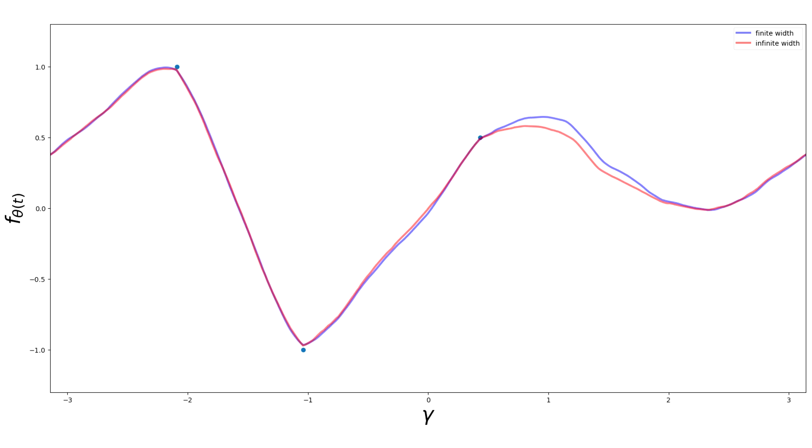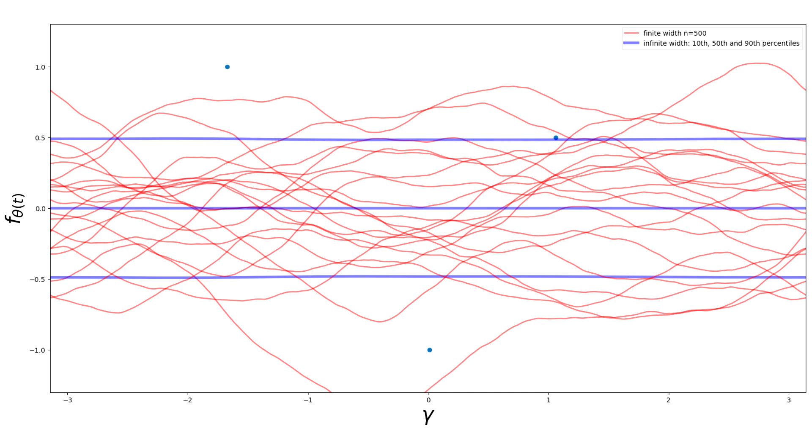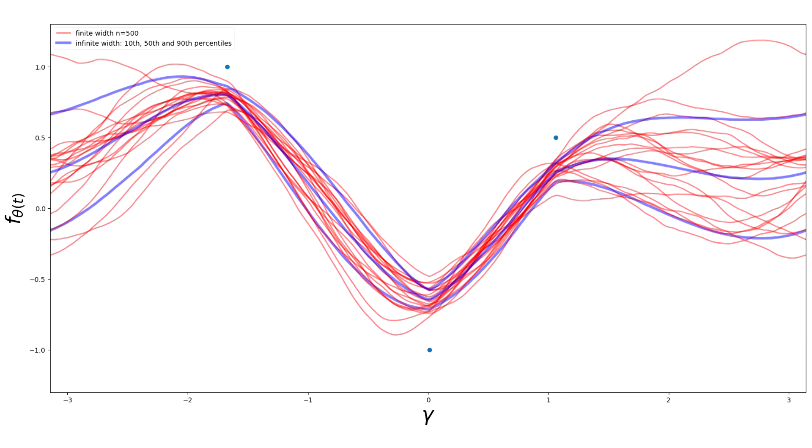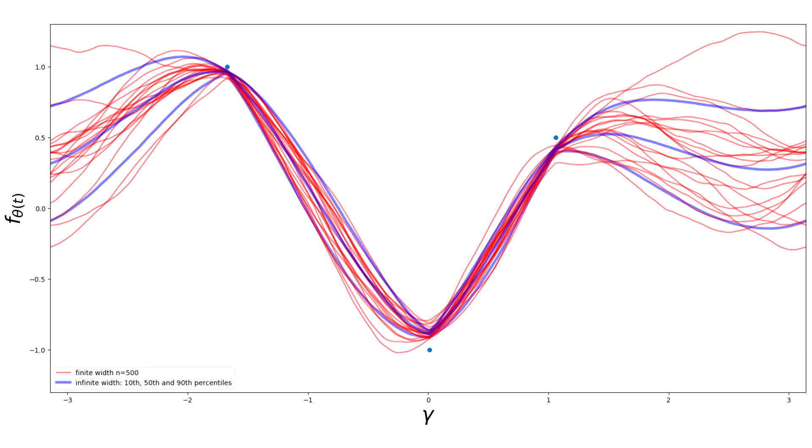For a least square cost, f theta follows a linear differential equation. This implies that its distribution is Gaussian not only at initialization but at all time steps to compute the mean and covariance during training.